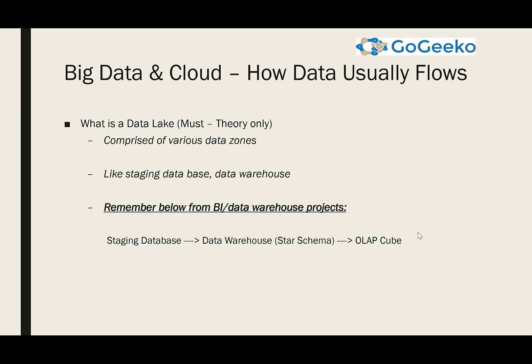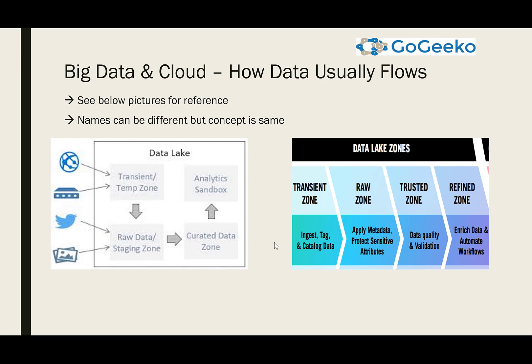Another important concept in big data and cloud is how data usually flows through zones. You can use any terminology, but this is very common. Think of it like your staging database and data warehouse in a data warehousing project — staging to data warehouse to OLAP cube. In cloud and big data, data comes from outside, goes to a transient or temp zone, then to a raw or staging zone, and finally to a curated zone. In some cases, people create an analytics sandbox for analytics work and queries.